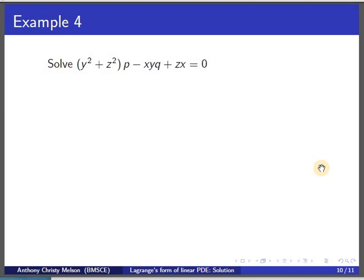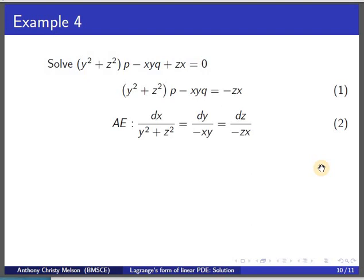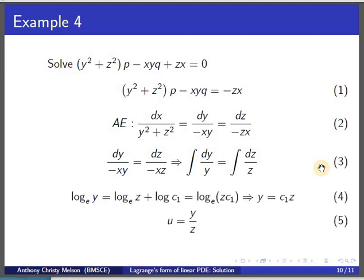Another example of case 2: y²+z²·p minus xy·q plus zx equal to zero. This is not in standard Lagrange form, so the first step is to rearrange it, giving the auxiliary equation dx/(y²+z²) equal to dy/(−xy) equal to dz/(−zx). The obvious choice for the first solution is dy/(−xy) equal to dz/(−zx). Eliminating x and separating variables, we integrate to get log y equal to log z plus log c1, giving y equal to c1·z, so u equals y/z.